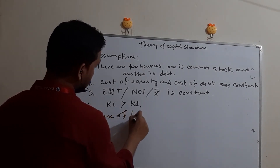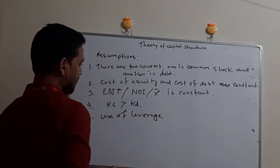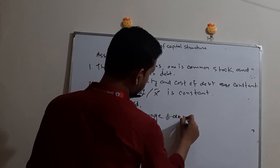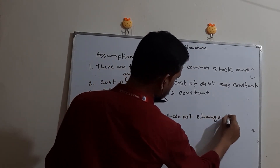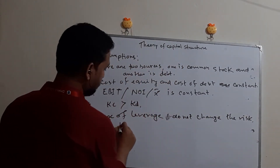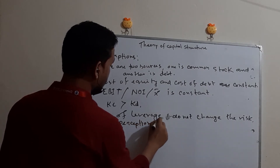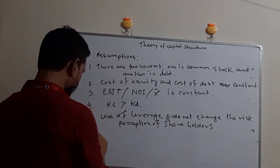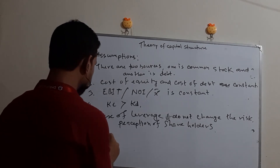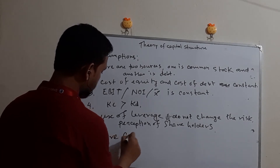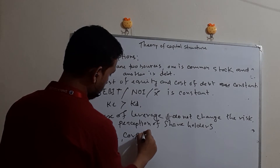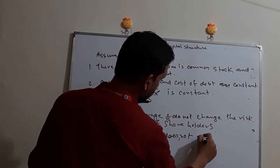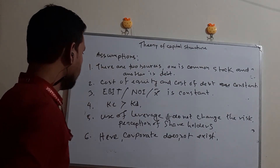The fifth assumption is that use of leverage does not change the risk perception of shareholders. The sixth assumption is that corporate tax does not exist.